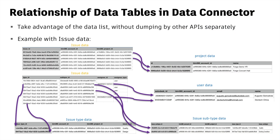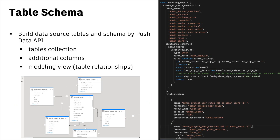The tables from Data Connector have relationships. For example, in the issue table, we can get the project ID. In the project table, we can know the corresponding role of this project by the project ID, and get more detailed information of the project. We define the table schema in Power BI, including the available columns of the tables from Data Connector, additional customized columns, and modeling views of Power BI based on the table relationships.